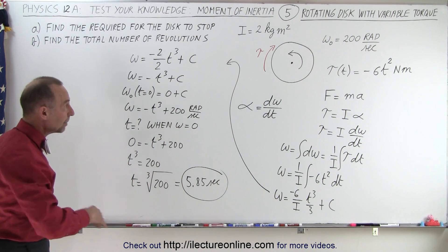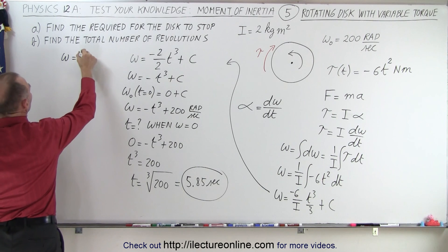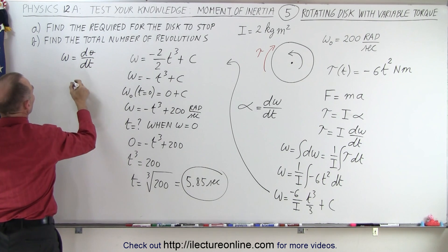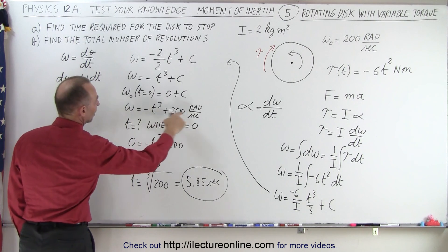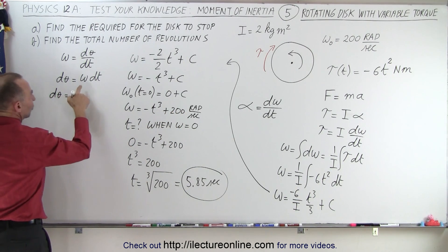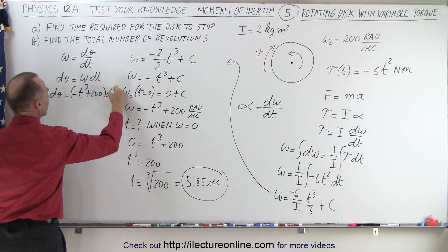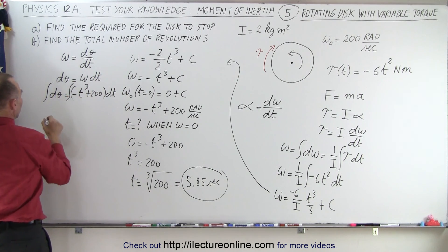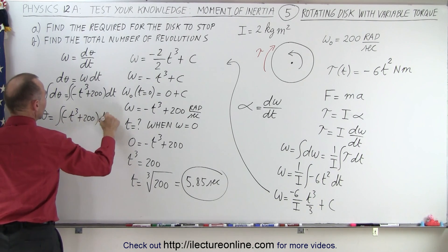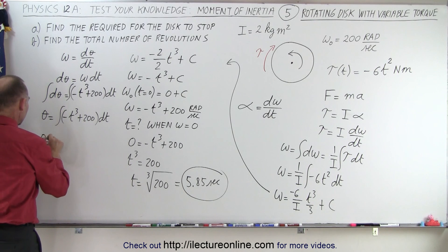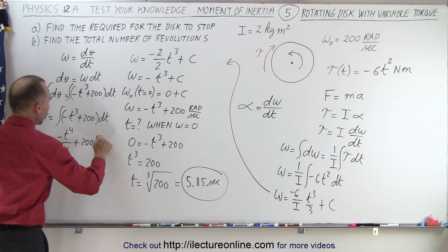Next question: how many revolutions did the disk go through before coming to a stop? For that, we start with the definition of omega: omega equals dθ/dt, which means dθ equals omega times dt. Since omega equals minus t cubed plus 200, we have dθ equals (minus t cubed plus 200) dt. Integrating both sides, theta equals the integral of (minus t cubed plus 200) dt, which gives theta equals minus t to the fourth over 4, plus 200t, plus a constant of integration.